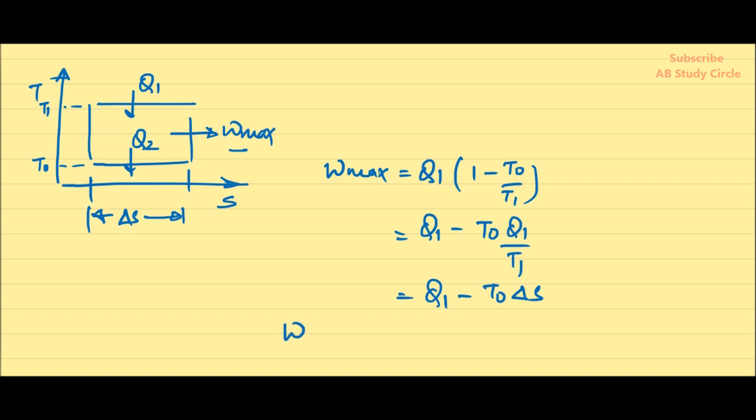Now, see your W max plus T0 del S is your Q1. See, here your W max is your AE, and T0 del S is your UE, that is the unavailable energy. This W max is your available part of your heat supplied, and T0 del S, that is nothing but your Q2, is your unavailable part of your heat supplied.